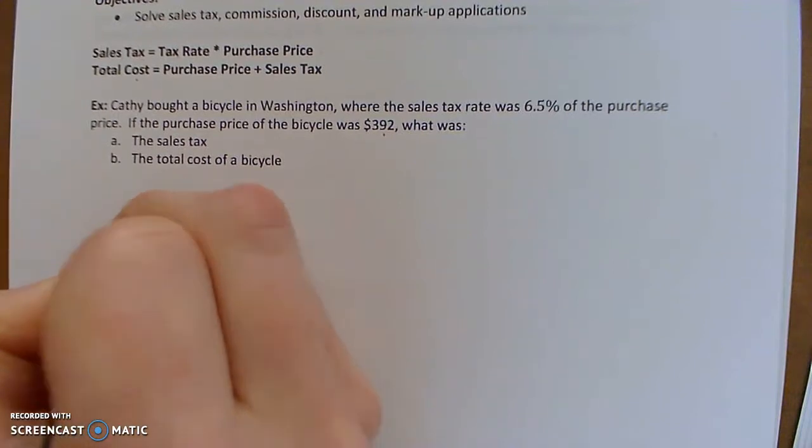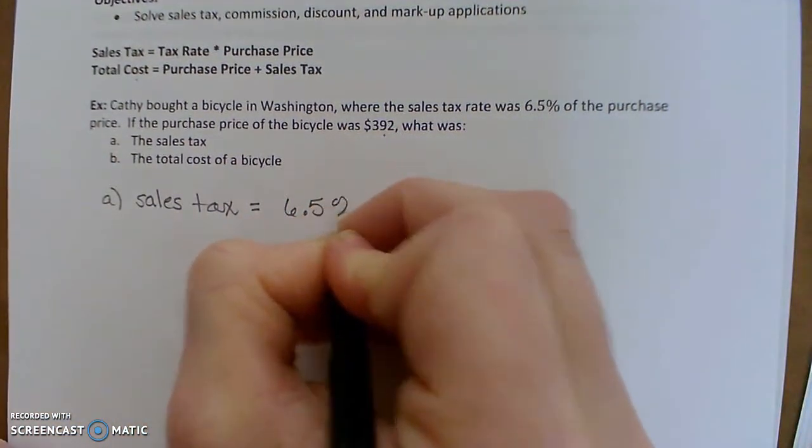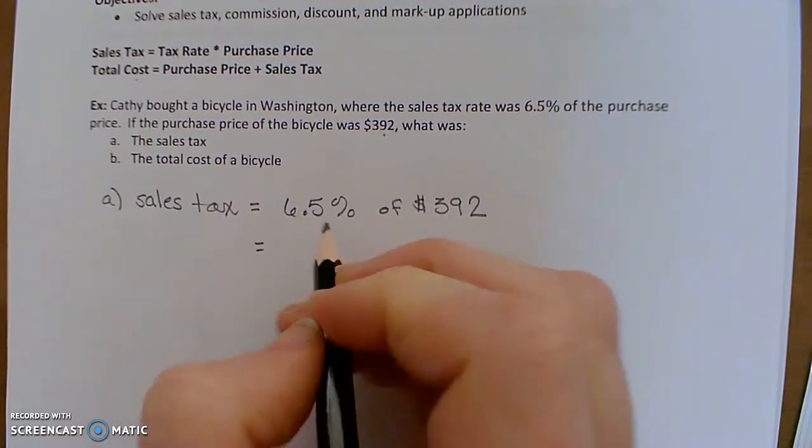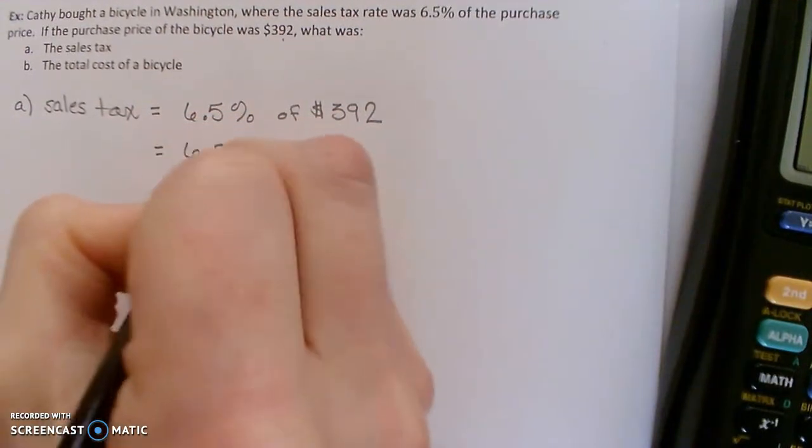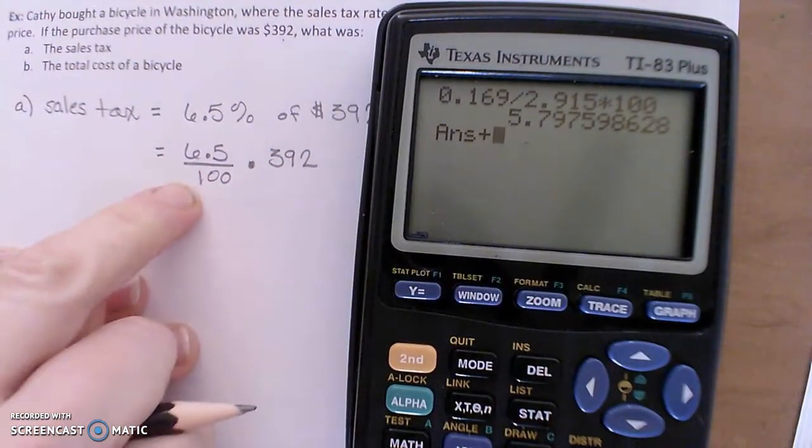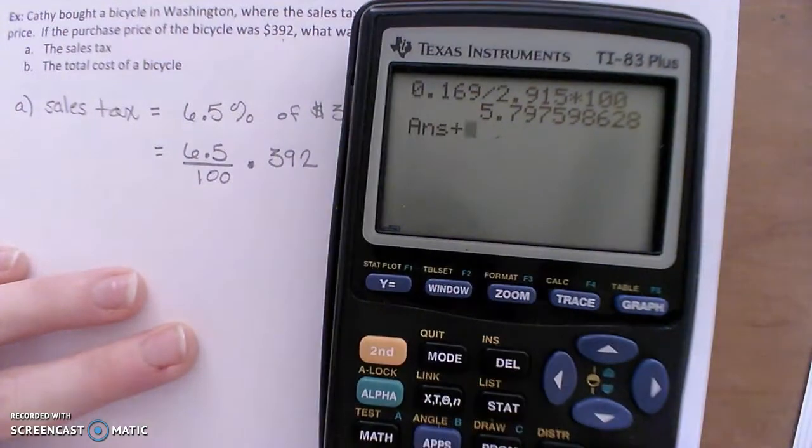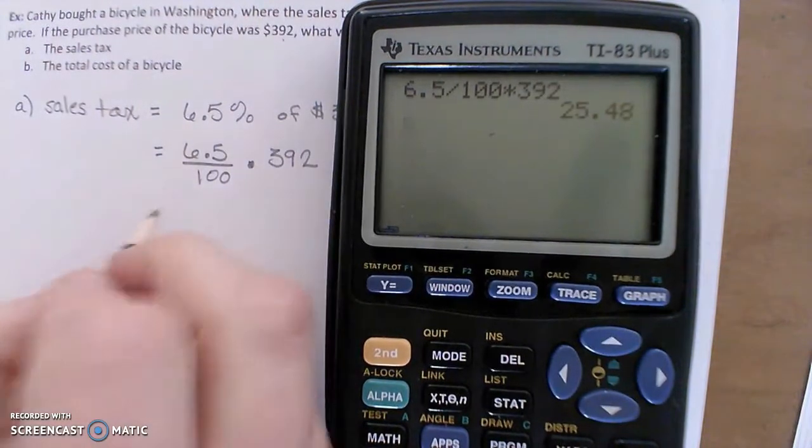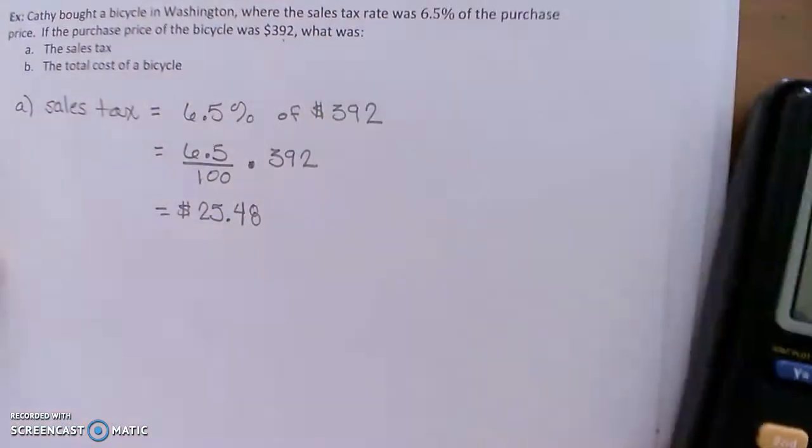So first, let's calculate the sales tax. The sales tax will be that tax rate, 6.5% of the $392. So let's calculate that. Remember 6.5%, if you want to plug the whole thing into your calculator, you would do 6.5 over 100 times $392. Or you could just move that decimal point over and just say 0.065. So 6.5 over 100 times $392 gives me $25.48. So that's the amount of tax.